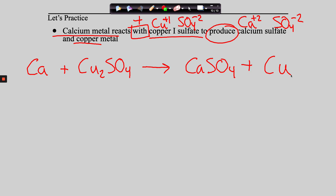Now balance it: Ca + Cu2SO4 → CaSO4 + 2Cu. One calcium on the left, one on the right — good. Two coppers on the left, one on the right — put a 2 in front of Cu. Can we balance SO4 intact? Yes — one on each side. It's now balanced. The only thing that makes these trickier is remembering how to write chemical formulas.